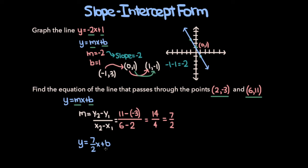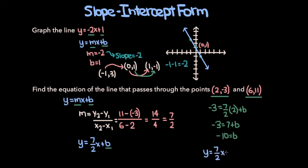Now all that's left is finding b. We know the point (2, −3) is on our line, so plugging in x equals 2 and y equals negative 3: negative 3 equals 7/2 times 2 plus b, which gives negative 3 equals 7 plus b. Subtracting 7 from both sides gives b equals negative 10. So the equation of the line is y equals 7/2 x minus 10.